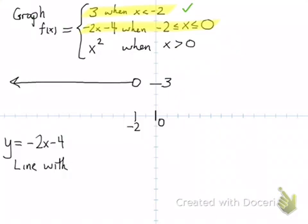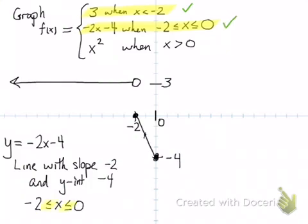We're looking at y equals negative 2x minus 4, which is a line with slope negative 2 and a y-intercept of negative 4. If you graph this out, it's going to look like this. But it's only for when x is between negative 2 and x and 0. So you start off at negative 2, and you go to the right until you hit 0, and that's when you stop. That's only the piece that we're looking at.